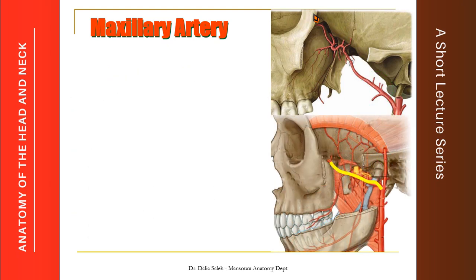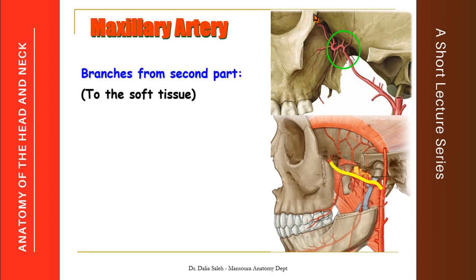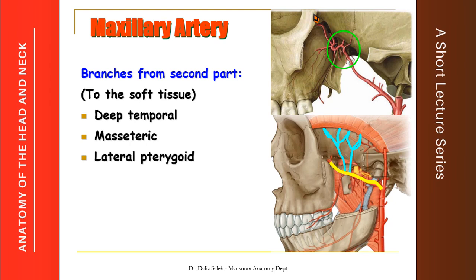The second part of the maxillary artery gives branches to the soft tissues in the infratemporal fossa. These include the deep temporal arteries, masseteric branches, lateral pterygoid branches, medial pterygoid branches, and the buccal branch.